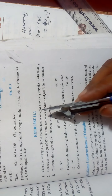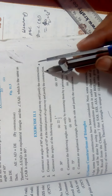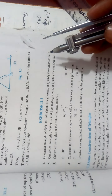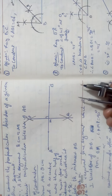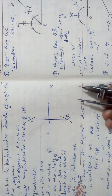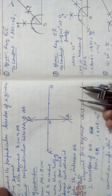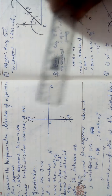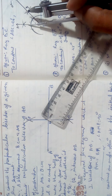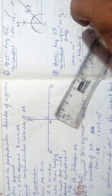Question 2: construct an angle of 45 degrees at the initial point of a given ray and justify your answer. You have already constructed 90 degrees — if you want to bisect it, draw the bisector, and it is 45 degrees. Same thing in the second case: first measure by protractor — you get 90 degrees.